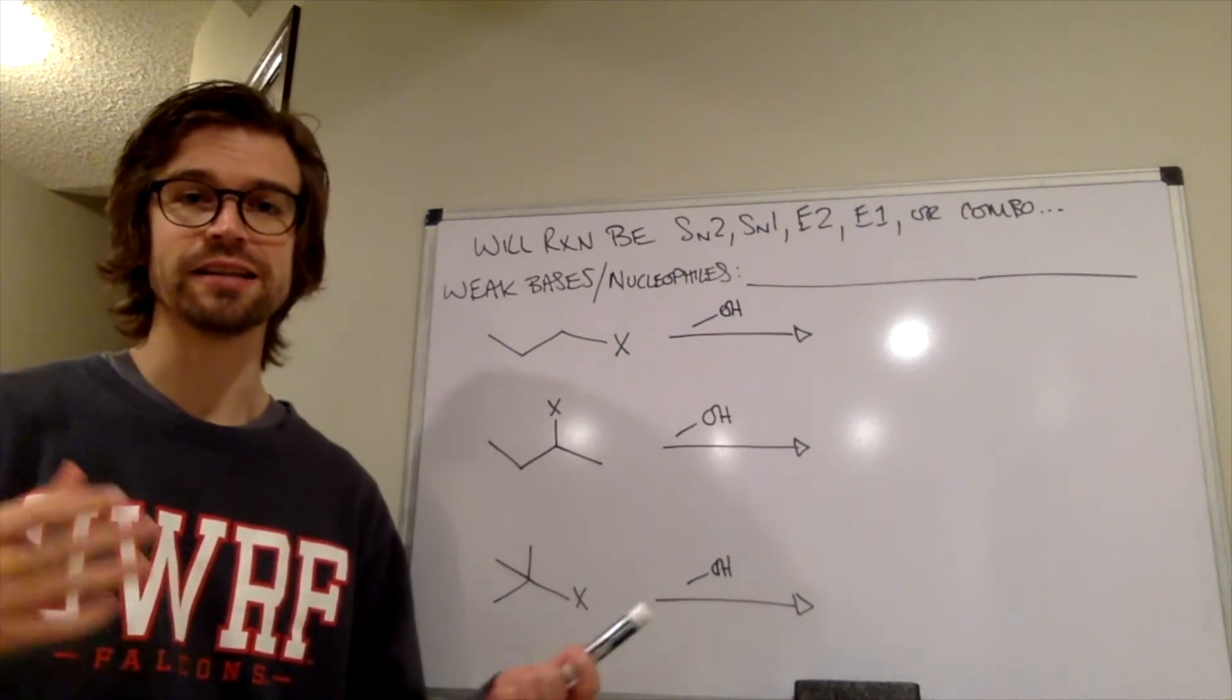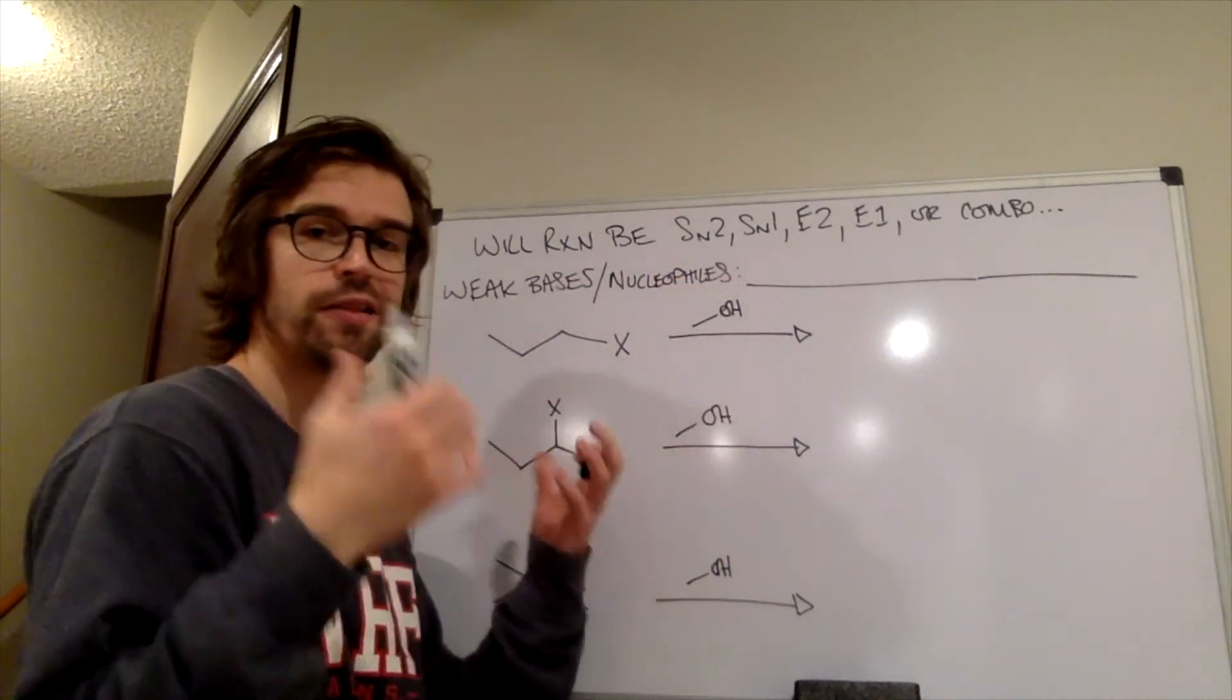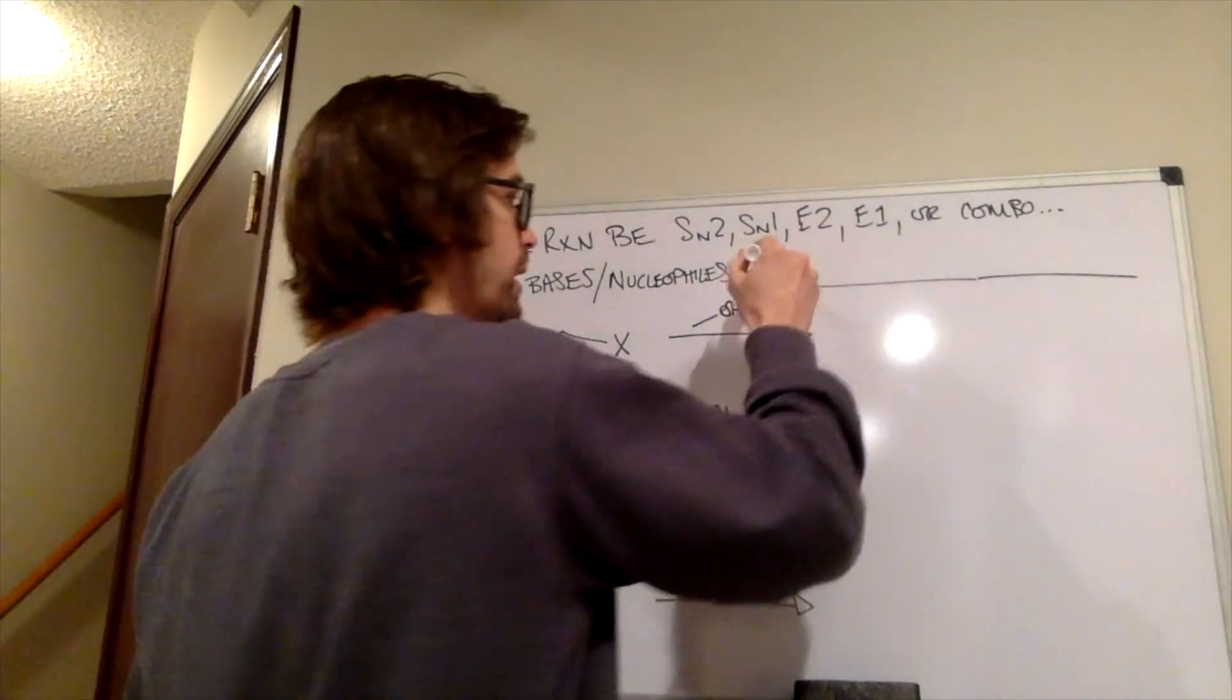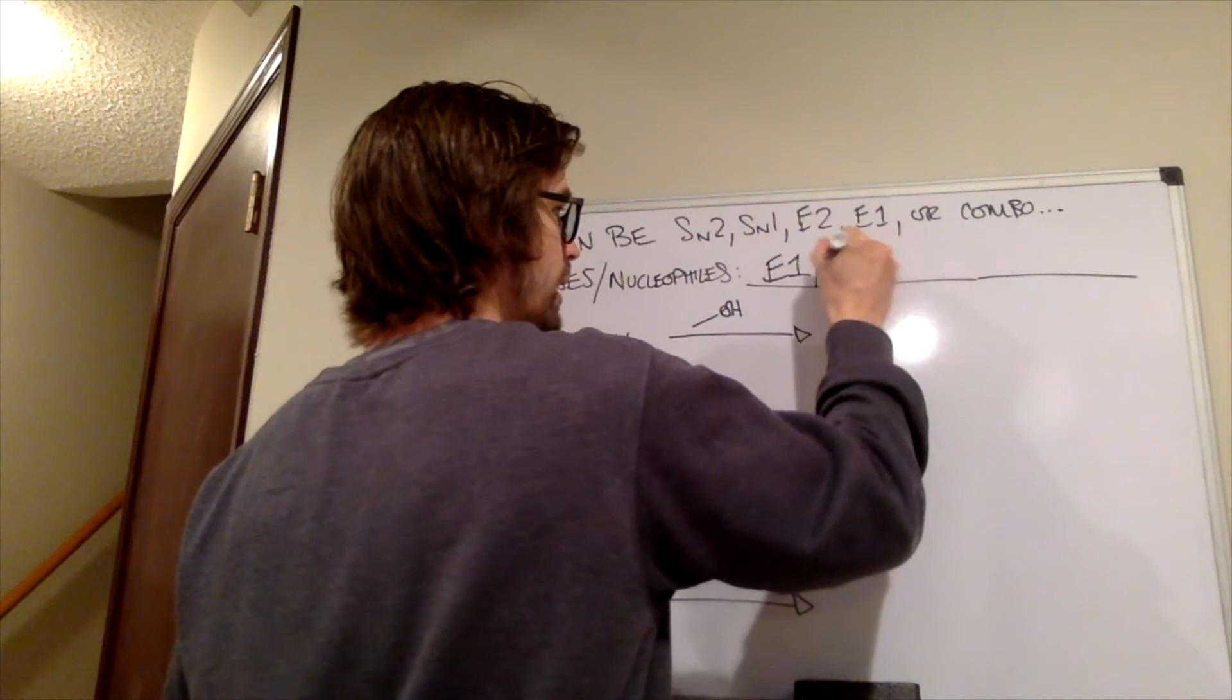And if a carbocation forms, then that means that it is undergoing a unimolecular type of reaction. So weak bases and nucleophiles, they wait around, and that means that they are only doing E1, SN1.